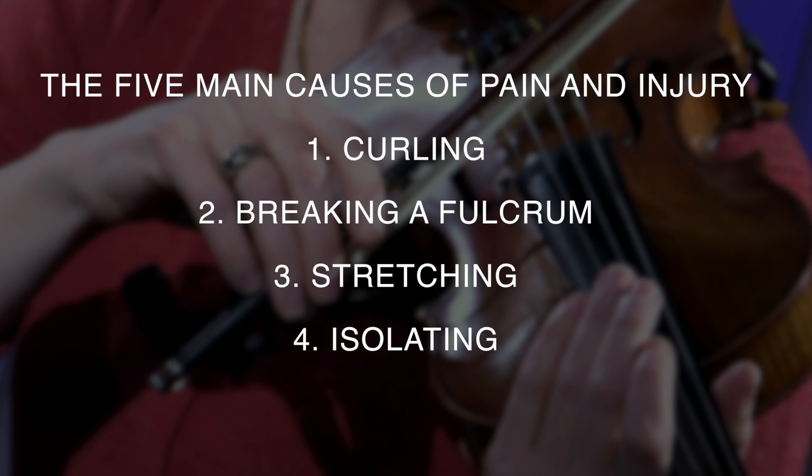Next we come to isolating. Isolating often goes along with stretching and refers to the use of one part in isolation from the whole. So as with the little finger example for the left hand, once the finger has stretched away from the unit, it has no choice but to function in an isolated way, separate from the unit. This will require it to work very hard and it won't feel easy or comfortable. For the right hand, when we isolate the pinky finger and give it the task of balancing the bow, it is no longer working as part of the five-finger team and cannot fulfill its role as part of an integrated whole. Isolation is common in both the left and right hands in many forms.